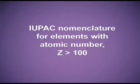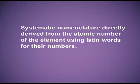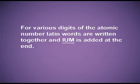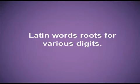IUPAC nomenclature for the elements with atomic number 100 and above uses systematic nomenclature directly derived from the atomic number of the elements using Latin words for their digits. IUPAC decided to give names as per the Latin words. For various digits of the atomic number, the Latin word roots are written together and 'ium' is added at the end. To write the IUPAC name, we have to know the word root for the various digits.